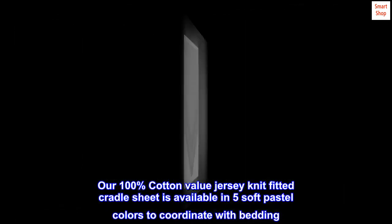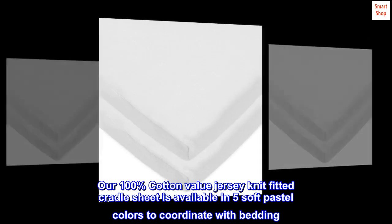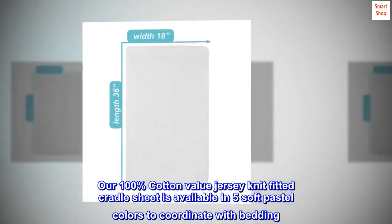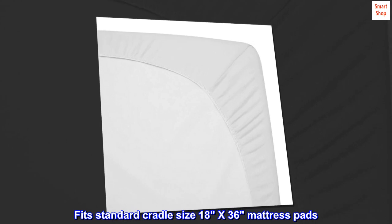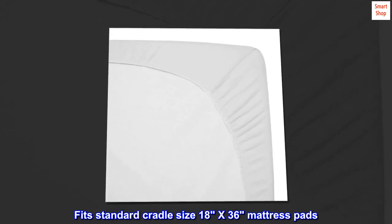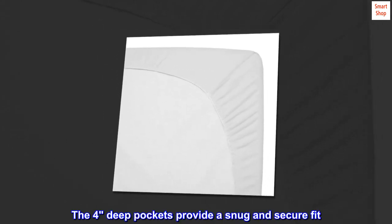Our 100% cotton value jersey knit fitted cradle sheet is available in 5 soft pastel colors to coordinate with bedding. Fits standard cradle size 18x36 mattress pads. The 4 deep pockets provide a snug and secure fit.